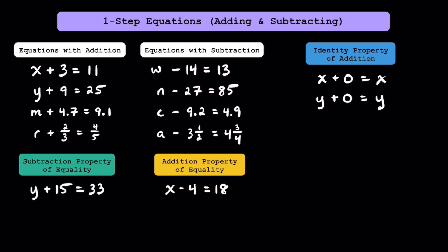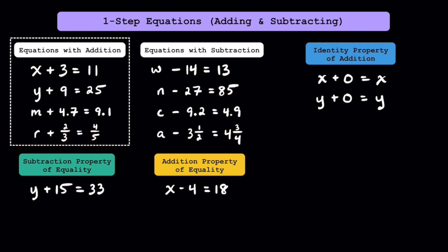At this point, you should be familiar with how to work with algebraic expressions. It turns out that whenever you set an expression equal to another expression, it becomes an equation. Let's start by looking at these equations over here. While these four equations have different variables and different numbers, including decimals and fractions, they have one specific thing in common — they all have addition. Whenever you see an equation with addition, we'll always solve them with the same strategy. I'll talk more about that in just a bit.